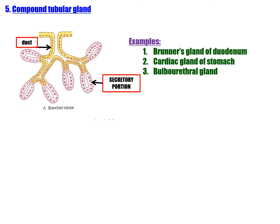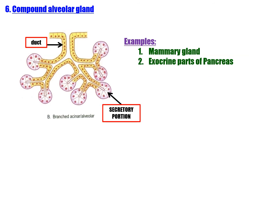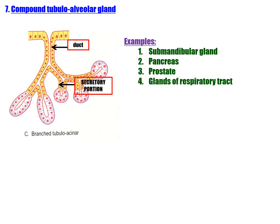Classification based on mode of secretion and branching pattern: compound alveolar gland — branched acinar/alveolar secretory portion. Examples: mammary gland, exocrine part of pancreas. Compound tubulo-alveolar gland — secretory portion includes both branched tubular and alveolar elements. Examples: submandibular gland, pancreas, prostate gland, glands of the respiratory tract.